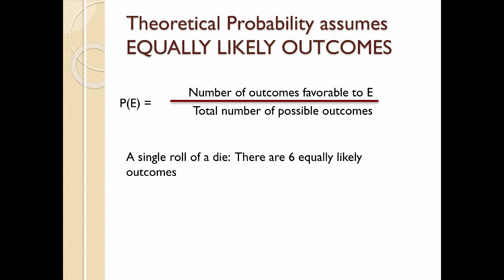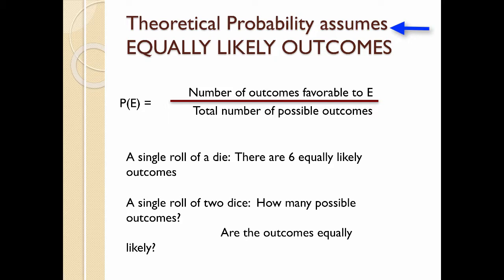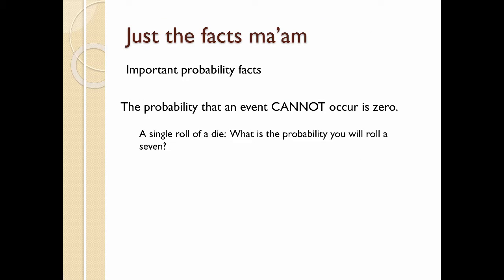When you roll a die, there are six equally likely outcomes. But now let me ask you this. Let's say you have two dice. How many possible outcomes? And are the outcomes equally likely? I'll let you think about that. In the meantime, let's go on to some important probability facts.